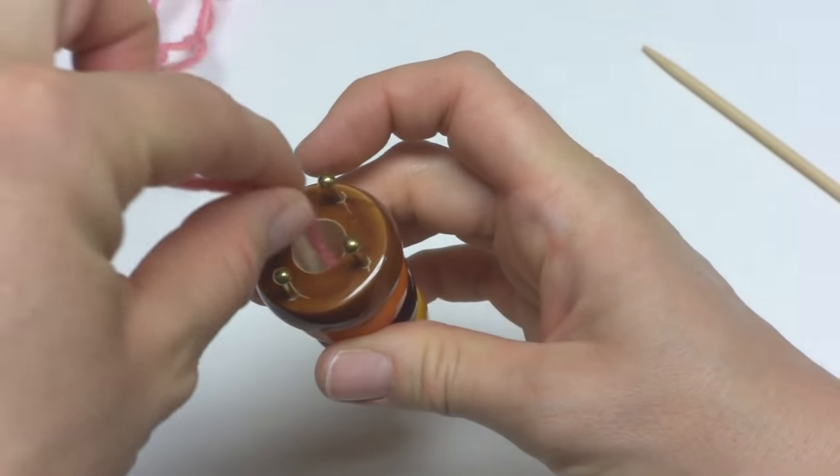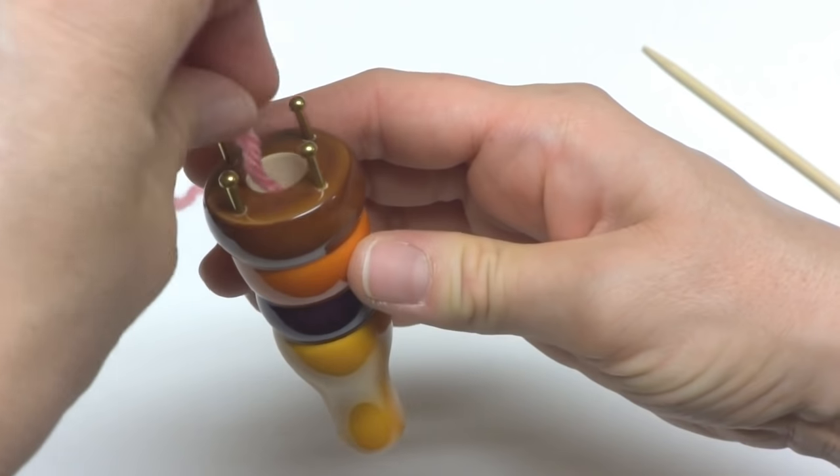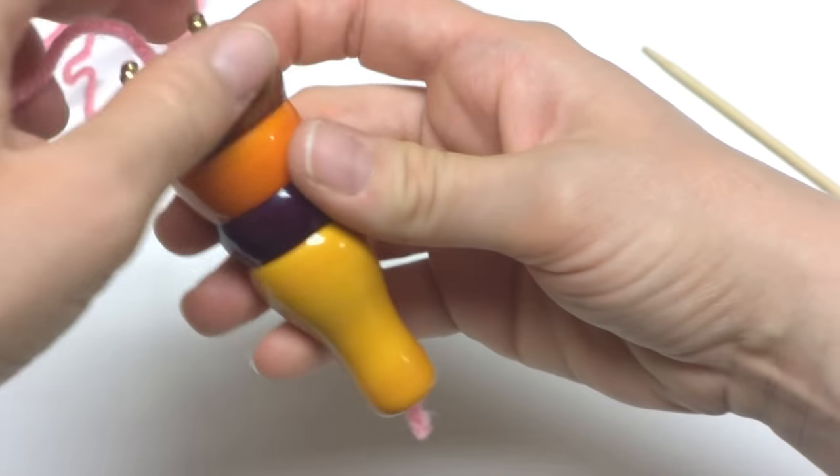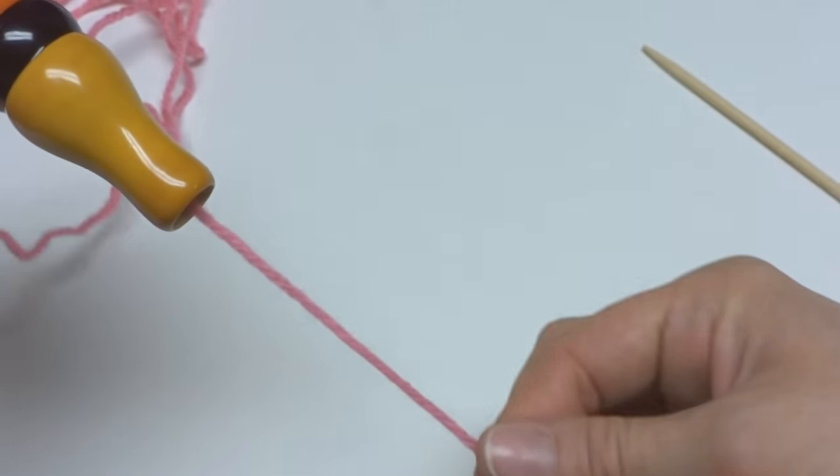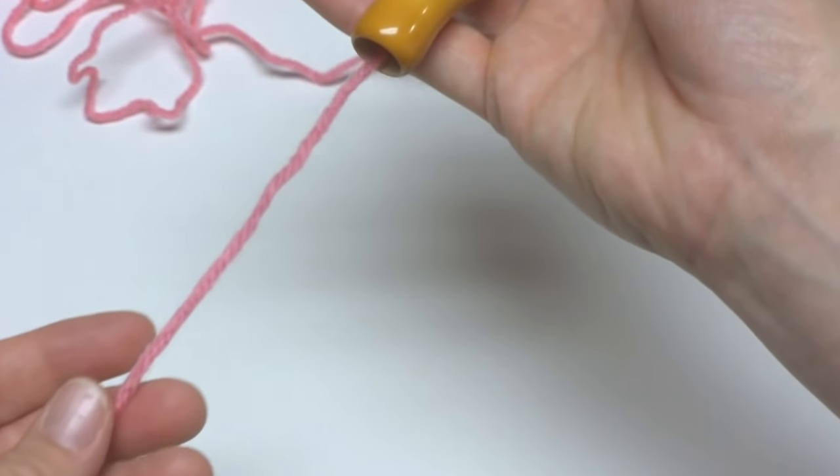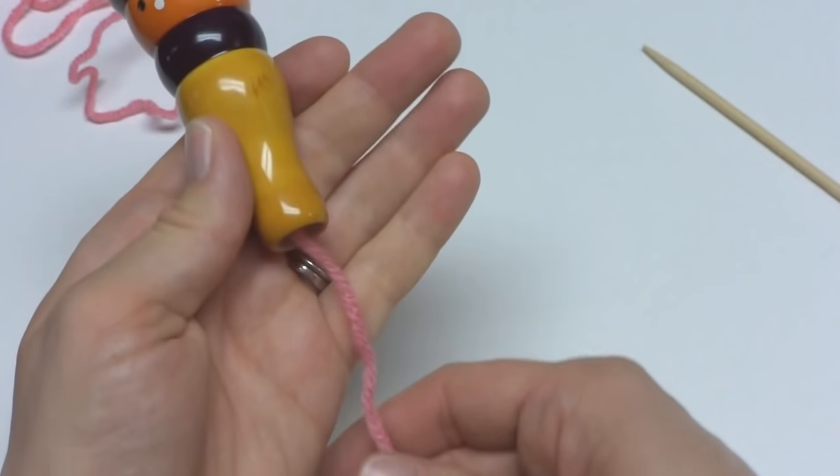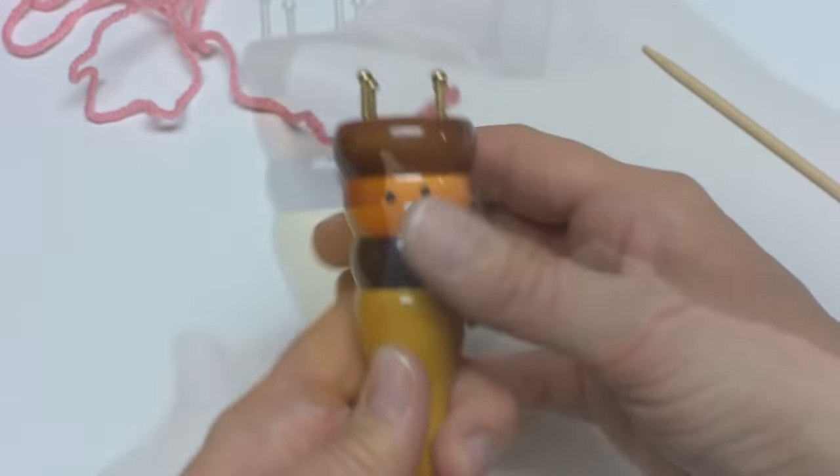We're just going to send it through the center of our knitting spool. It's going to come out the bottom. We're just going to pull it. This is about four or five inches or so. And then you're going to hold your knitting spool like this. I like to just kind of hold the bottom.